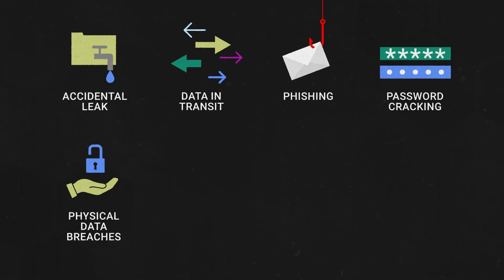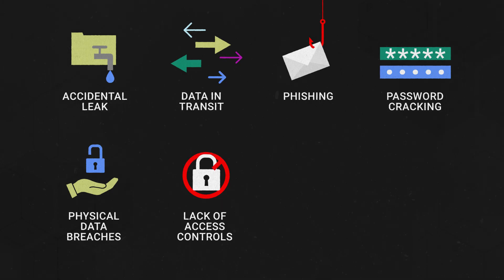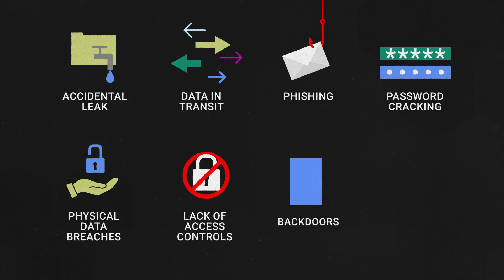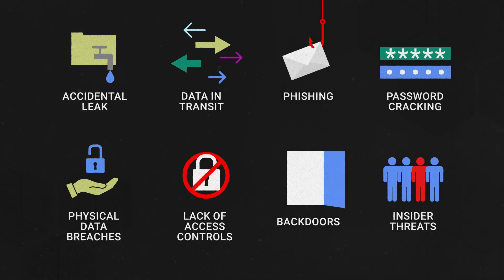Physical data breaches like if an attacker accesses the physical location of data, or finds or steals hardware like a USB drive or laptop, a lack of access controls providing an easy entry point for unauthorized access, backdoors or undocumented ways to enter a network, and insider threats — that is, employees who have legitimate access and abuse it.